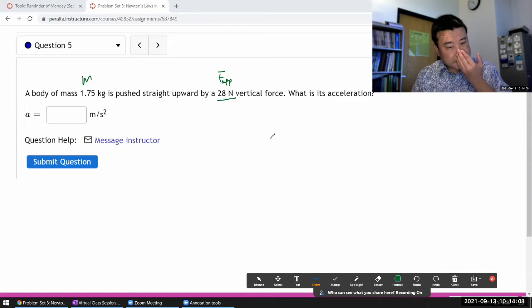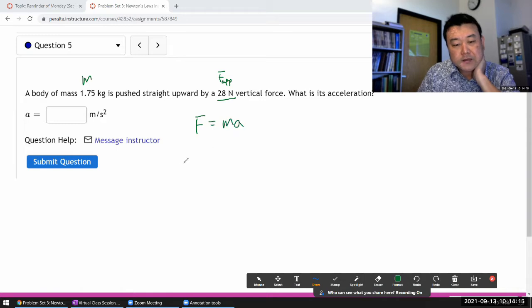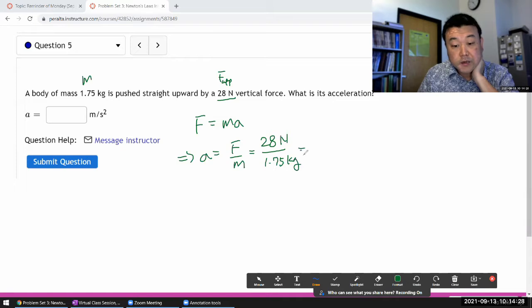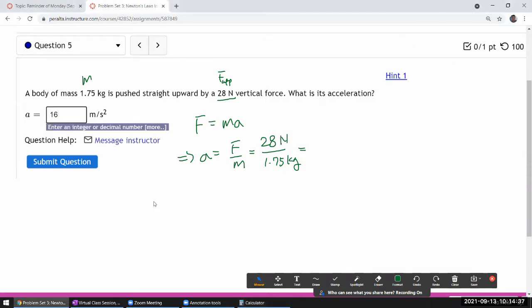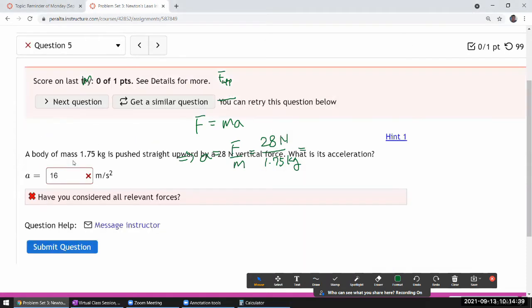And in a question like this, it's really easy to think, oh, Newton's second law F equals mA, and say acceleration is the force divided by mass. You have the force 28 newtons divided by 1.75 kilograms. Get a number: 28 divided by 1.75, 16. Enter that, and see that the system says your answer is wrong.